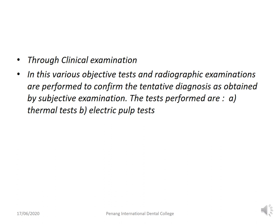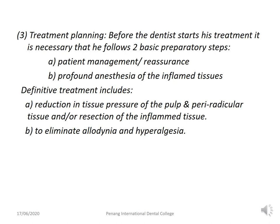After history taking, the second step is thorough clinical examination. In this step, various objective tests are carried out and if required, radiographic examinations as well as other tests such as pulp sensibility tests — including thermal tests and electric pulp tests — are performed. Once a decision is made that it is an endodontic emergency, immediate treatment is required.